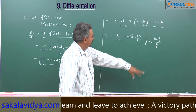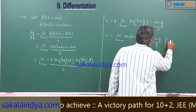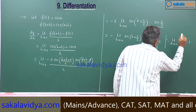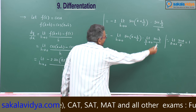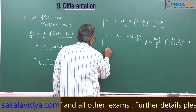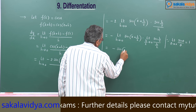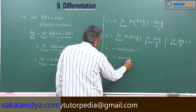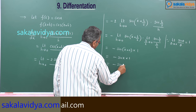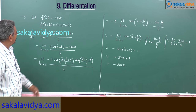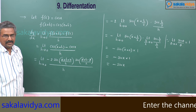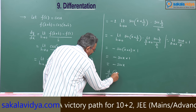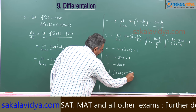Now observe that sin(h/2) by (h/2) is in the form of limit theta tends to 0 of sin theta by theta, which equals 1. So this becomes 1. Putting h equal to 0 in the remaining term, we get minus sin(x + 0) into 1, which equals minus sin x. Therefore, d/dx of cos x is equal to minus sin x. The differential coefficient of cos x with respect to x is minus sin x.